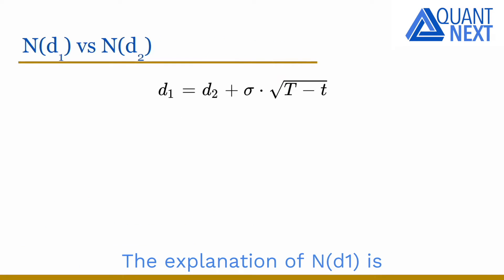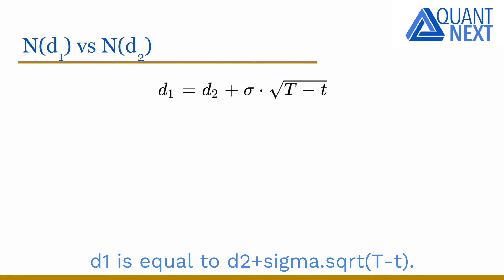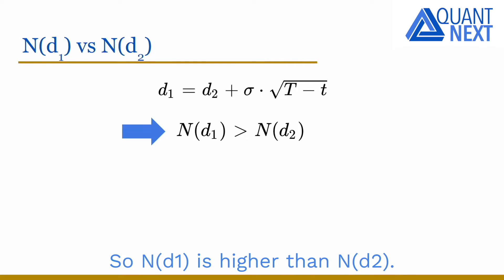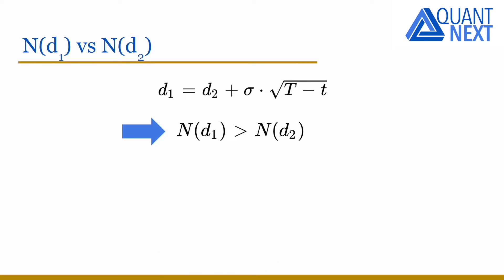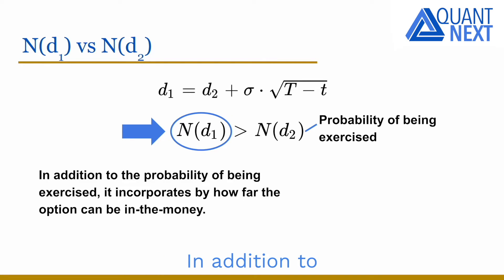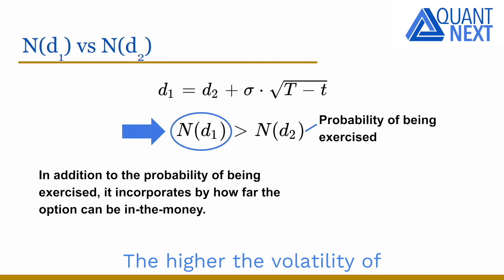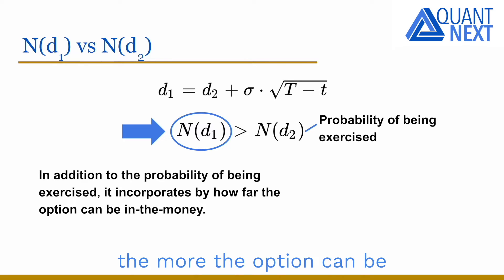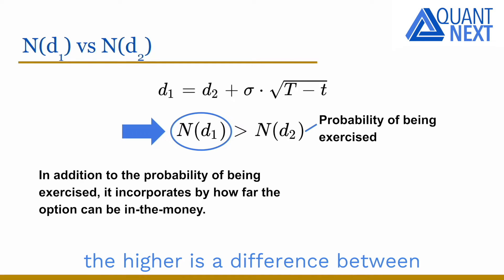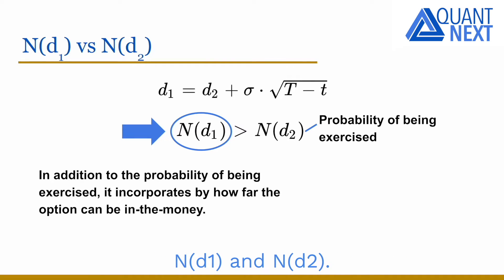The explanation of N of D1 is a bit more complex. D1 is equal to D2 plus sigma times the square root of capital T minus t, so N of D1 is higher than N of D2. In addition to the probability of being exercised, N of D1 incorporates by how far the option can be in the money. The higher the volatility of the stock price or the time to maturity of the option, the more the option can be deep in the money, and the higher is the difference between N of D1 and N of D2.